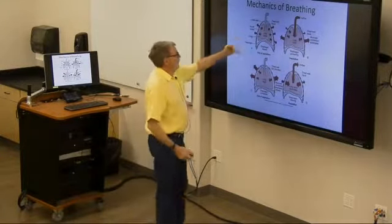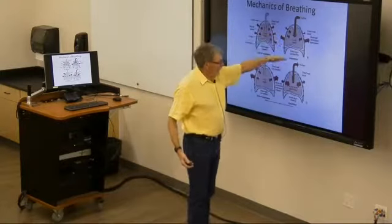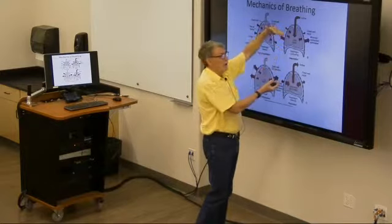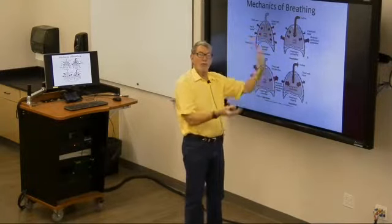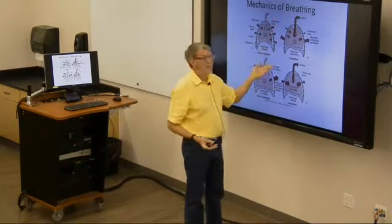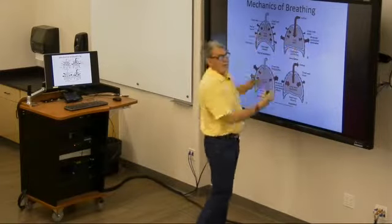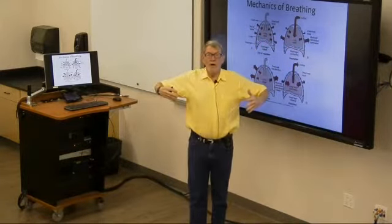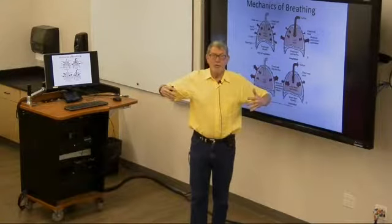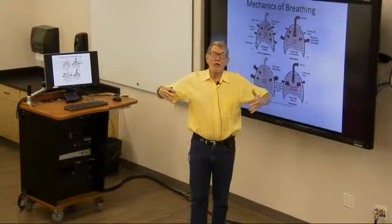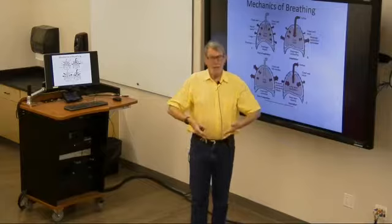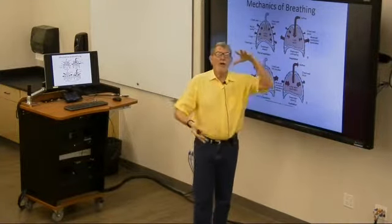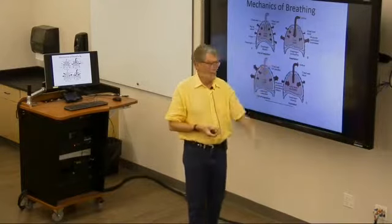Mechanics of breathing: we pull the diaphragm down. When it tightens it pulls down, elongating the lungs, making the volume bigger, which makes the pressure lower and sucks air in. You also expand the chest wall. External intercostals pull outward, then the internal intercostals pull back inward, and the diaphragm relaxes back up. The lungs get smaller and the air goes back out again.